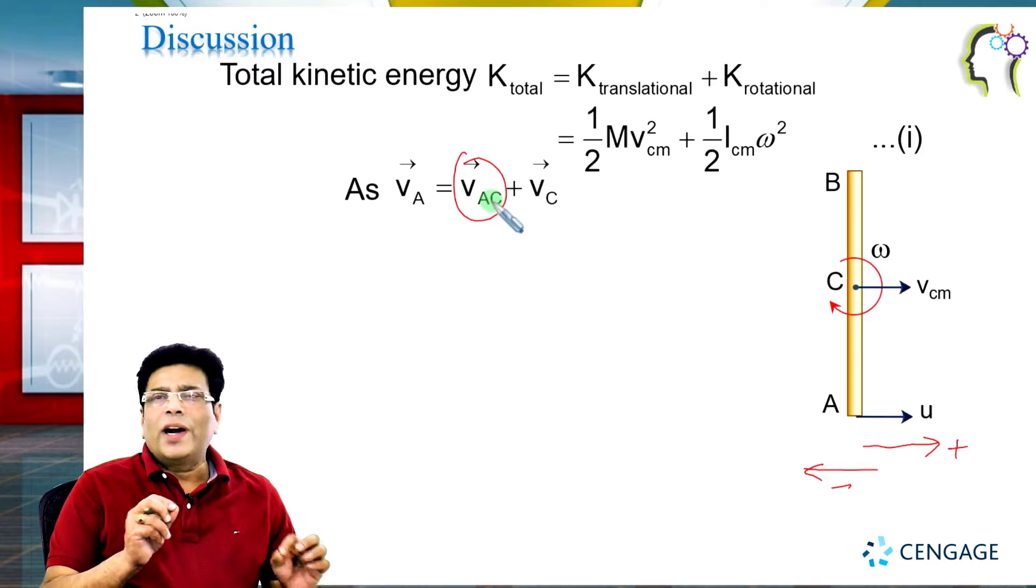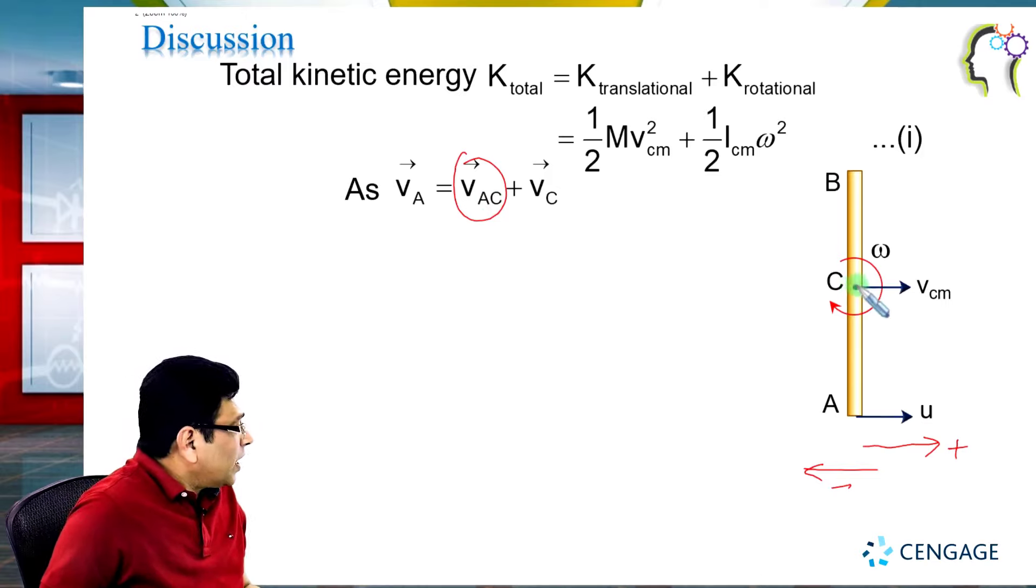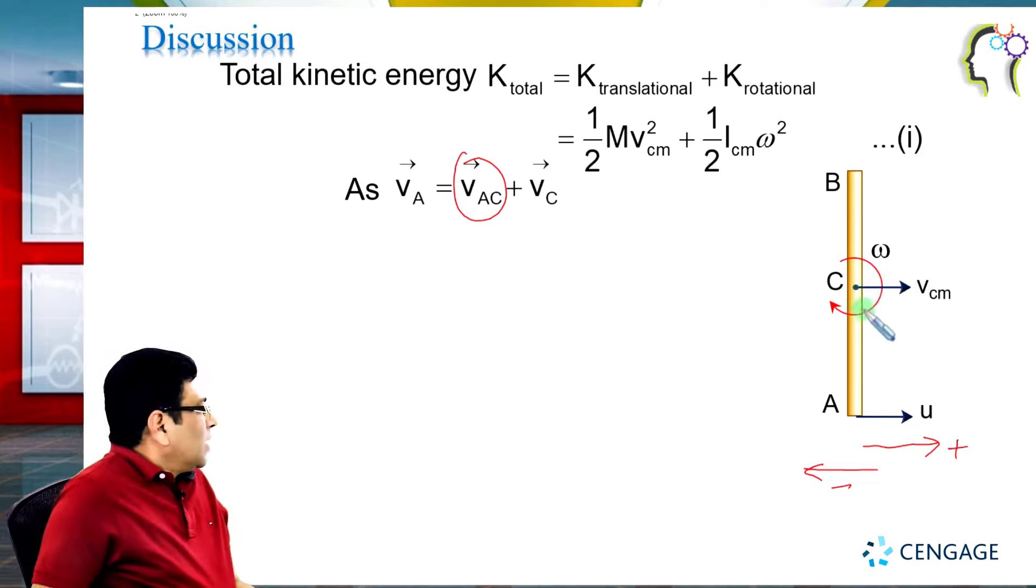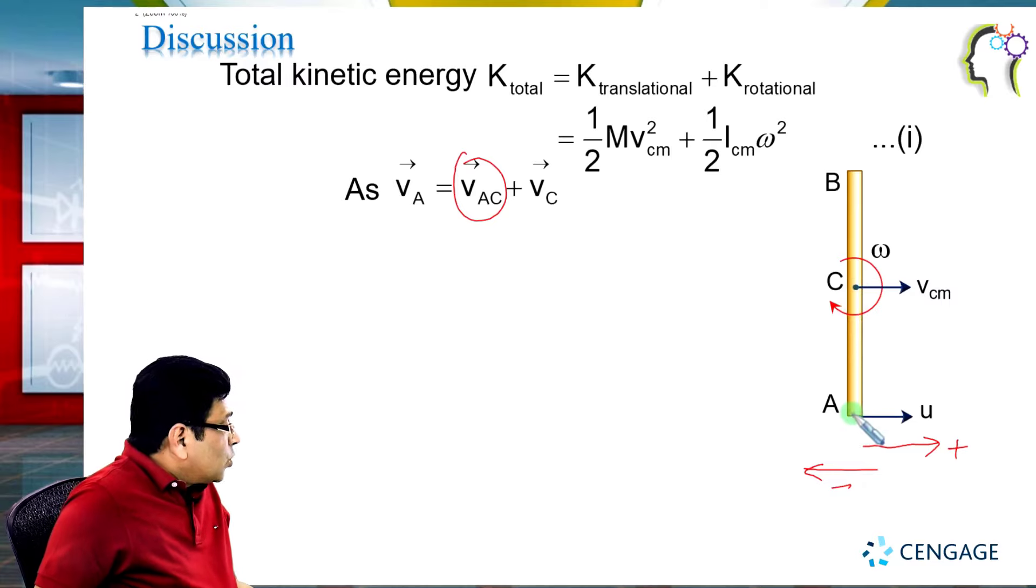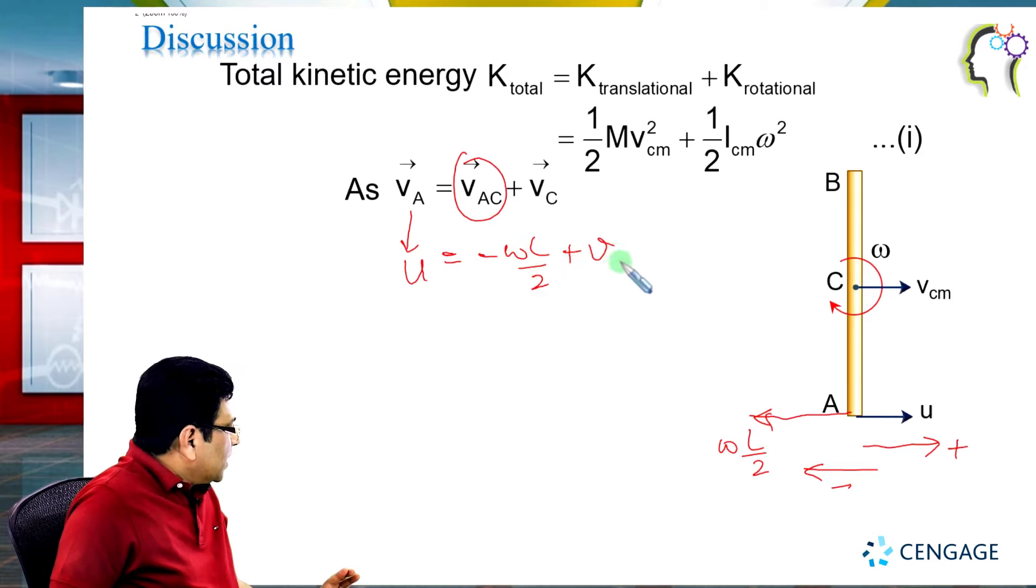That means if an observer is looking from the centroidal frame, they will not observe VCM because they themselves are moving with velocity VCM. The velocity of A with respect to C will be in this direction and equals omega multiplied by L/2. This is L/2, so we can write VA equals u minus omega L/2 equals VCM.